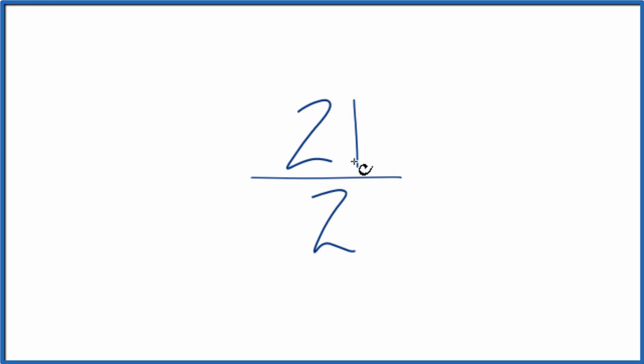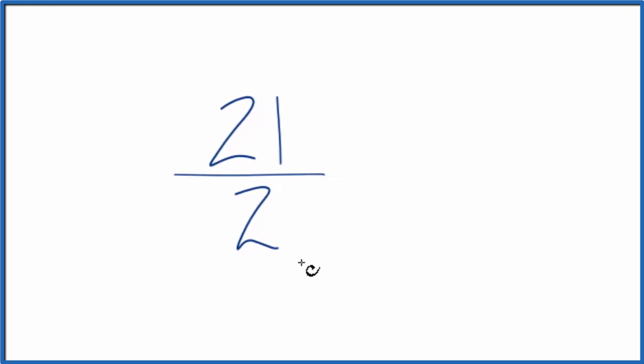So therefore 21 over 2 is already simplified. It's in lowest terms. Note that it is an improper fraction, so you could change it to a mixed number. We say it's an improper fraction because the numerator is larger than the denominator.